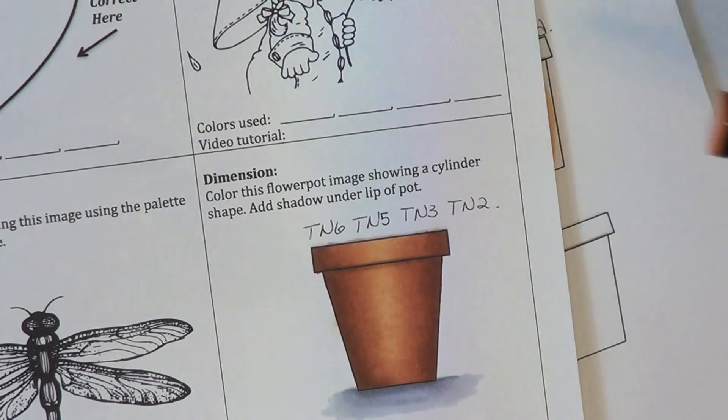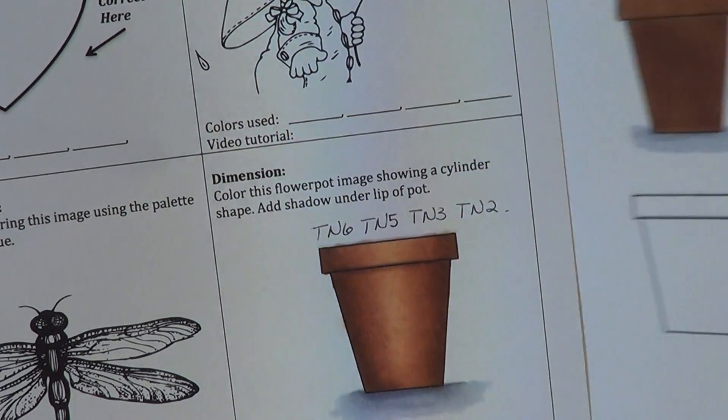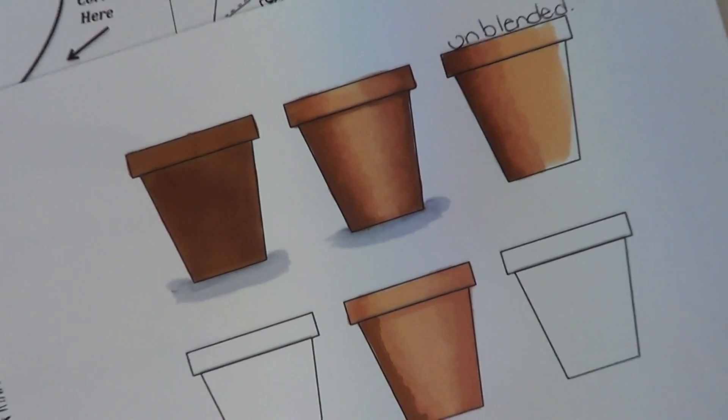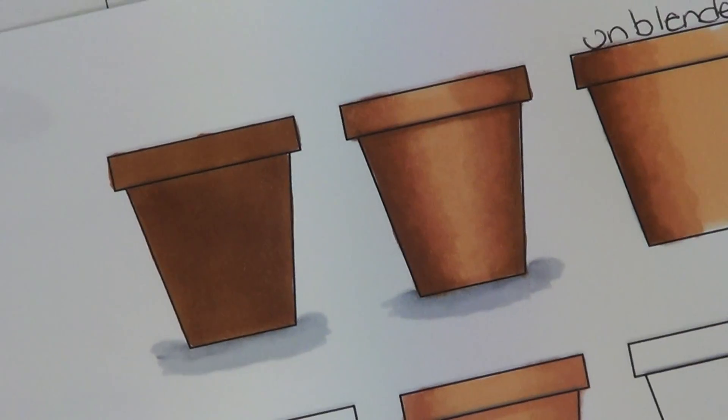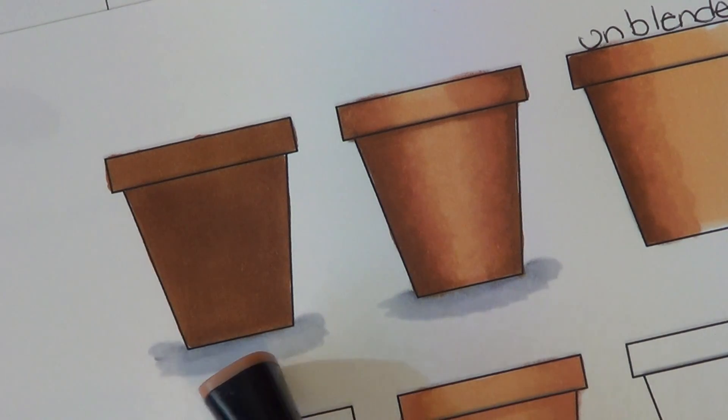What I want to do is show you the difference of coloring with dimension versus a flat image. Here I've colored my image a few times and I'm going to scoot in a little bit closer. You can see this first image here. I colored it with just one color. It looks very boring and flat with no life.